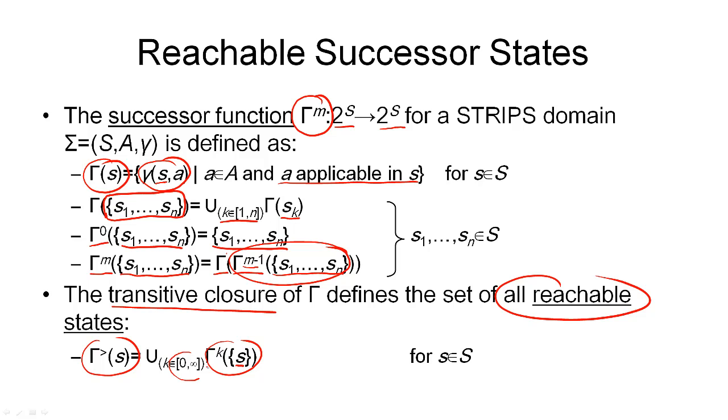And we can apply 0, 1, 2, 3, and so on, up to infinity steps. And if we take the union of all that, that is all the states that are reachable from our initial state S. And that is the function gamma forward of S.